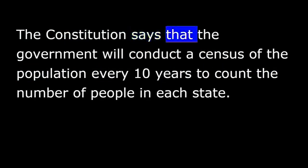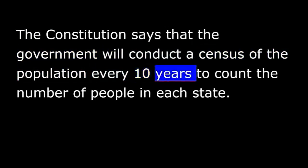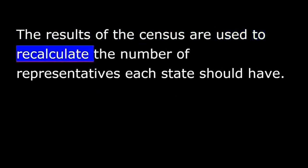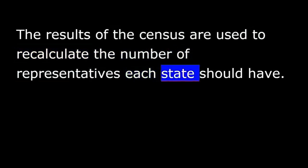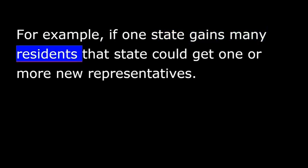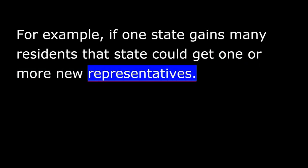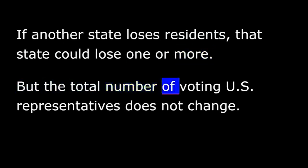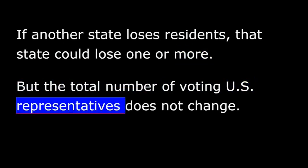The Constitution says that the government will conduct a census of the population every 10 years to count the number of people in each state. The results of the census are used to recalculate the number of representatives each state should have. For example, if one state gains many residents, that state could get one or more new representatives. If another state loses residents, that state could lose one or more. But the total number of voting U.S. representatives does not change.